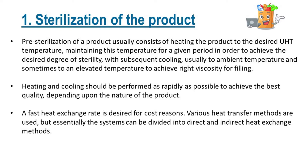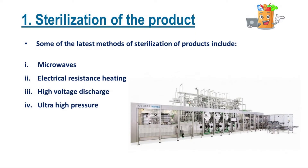Pre-sterilization of a product usually consists of heating the product to the desired UHT temperature, maintaining this temperature for a given period in order to achieve the desired degree of sterility, with subsequent cooling — usually to ambient temperature and sometimes to an elevated temperature to achieve right viscosity for filling. Heating and cooling should be performed as rapidly as possible to achieve the best quality. Various heat transfer methods are used, but essentially the systems can be divided into direct and indirect heat exchange methods. Some of the latest methods of sterilization of products include microwaves, electrical resistance heating, high voltage discharge, and ultra-high pressure.